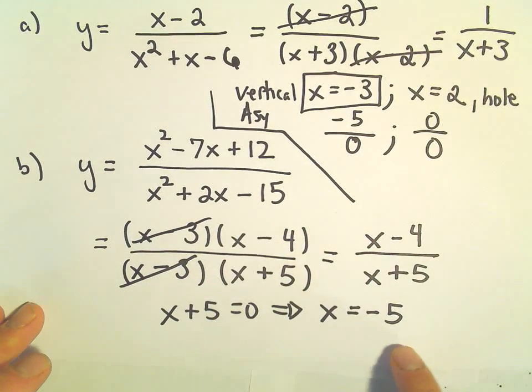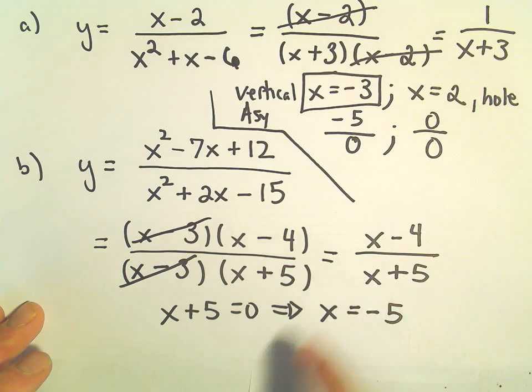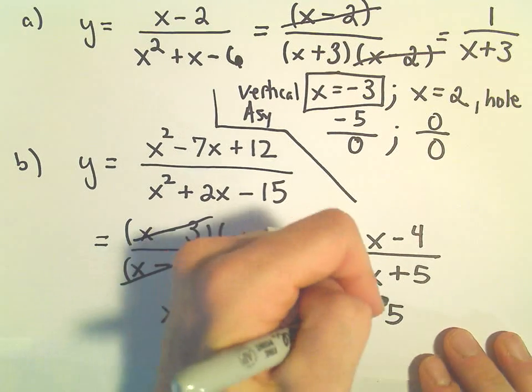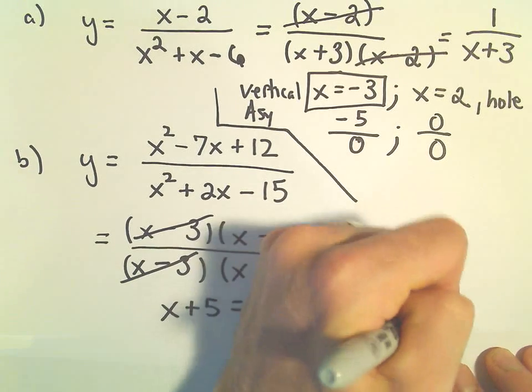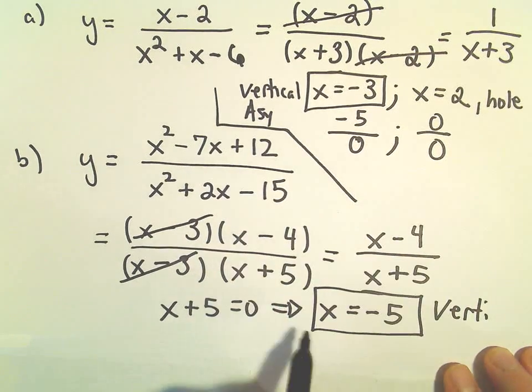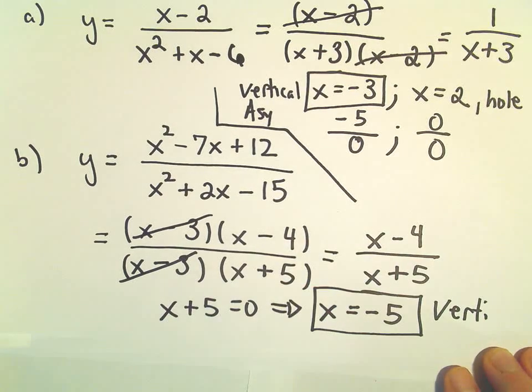And again, you can check that it doesn't make the numerator equal to zero. Again, we've canceled out the common factors. So in this case, we would have a single vertical asymptote at the line x equals negative 5.